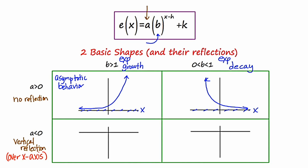Now on the bottom of the chart, a is less than zero — something negative — which produces a reflection over the x-axis. What I'm going to do is take the two graphs on the top and draw their mirror image over the x-axis. Both still contain asymptotes. That's the reflected version of exponential growth, and now the reflected version of exponential decay. On the next slide we're going to talk about the role of k and how it affects the appearance of these graphs.